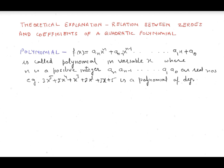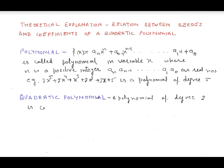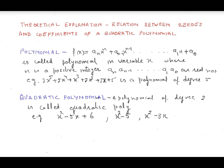Now I'll explain what a quadratic polynomial is. A polynomial of degree 2 is called a quadratic polynomial. For example, x^2 minus 5x plus 6, x^2 minus 5x, x^2 minus 3x are examples of quadratic polynomials. The general quadratic polynomial is ax^2 plus bx plus c, where a is not equal to 0.